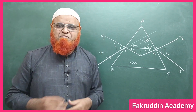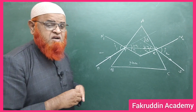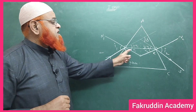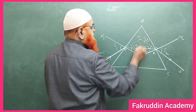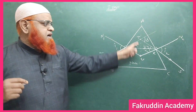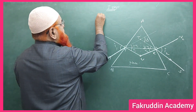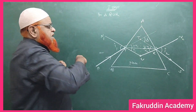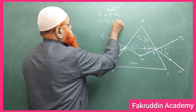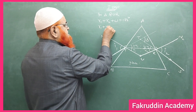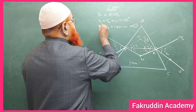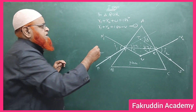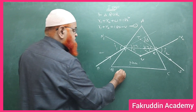The first step of the three-step formula: consider triangle QUR. In this triangle, r1 plus r2 plus angle U equals 180 degrees. Therefore r1 plus r2 equals 180 minus U. This is the first formula in our three-step approach.